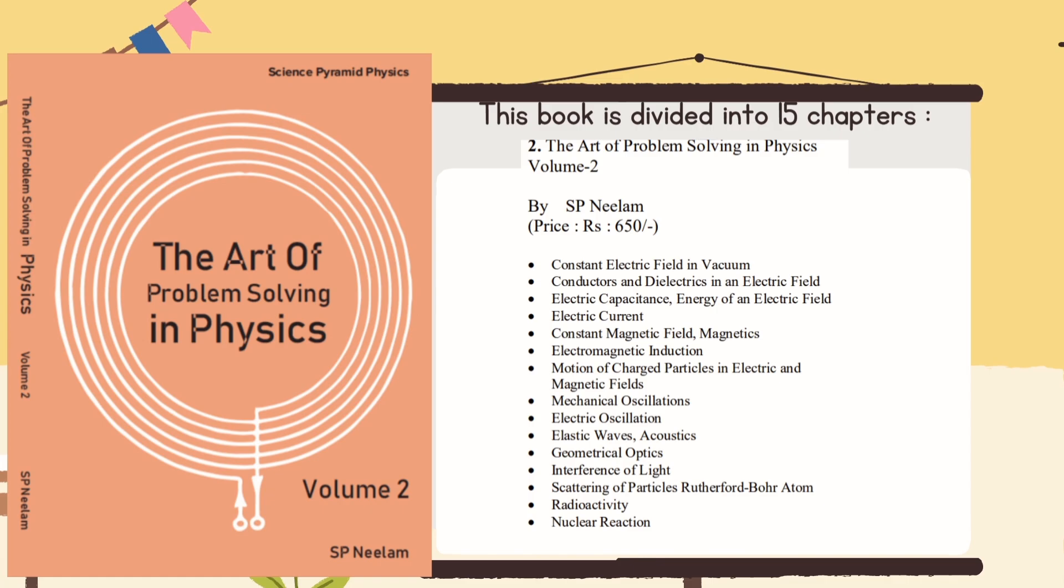This book covers 15 chapters, and the chapters included in this book are: Constant Electric Field in Vacuum, Conductors and Dielectrics in an Electric Field, Electric Capacitance, Energy of an Electric Field, Electric Current, Constant Magnetic Field, Magnetics, Electromagnetic Induction, Motion of Charged Particles in Electric and Magnetic Fields, Mechanical Oscillation, Electric Oscillation, Elastic Waves, Acoustics, Geometrical Optics, Interference of Light, Scattering of Particles, Rutherford-Bohr Atom, Radioactivity, and Nuclear Reactions.